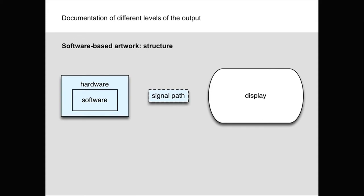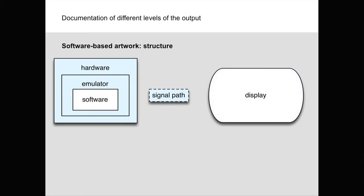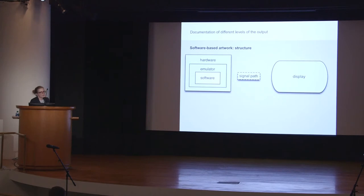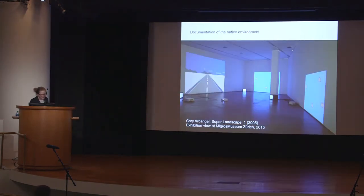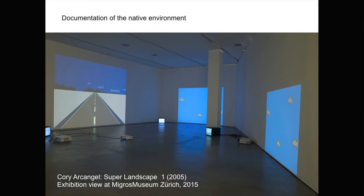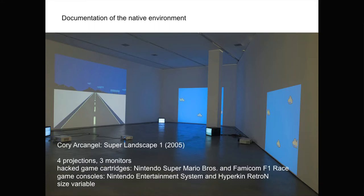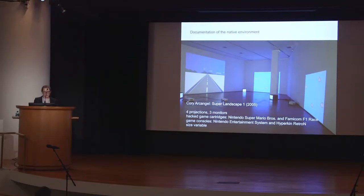I'm aware that this scheme might not be easily applicable to every single work. But let's start with the first example. This is a piece by Cory Archangel. The medium line says four projections, three monitors, hacked game cartridges, Nintendo Super Mario Bros. and Famicom F1 race, and game consoles, a Nintendo Entertainment System from the mid-80s, and Hyperkin Retro M, variable size.